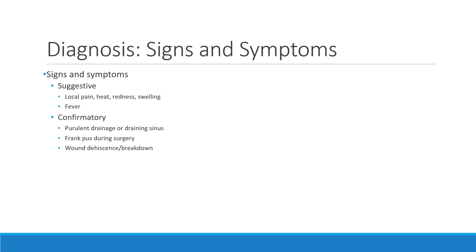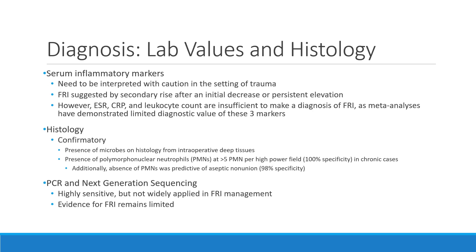In terms of signs and symptoms, local pain, heat, redness, swelling, and fever are only considered suggestive of FRI, as many of these overlap with the normal fracture healing response. What can be considered a confirmatory sign on exam is frank purulent drainage, a draining sinus, observation of frank pus during surgery, or evidence of wound dehiscence or breakdown.